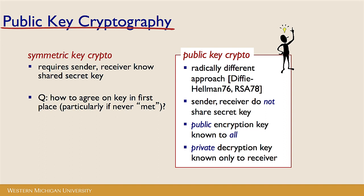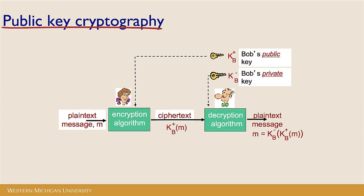Moving on to public key cryptography — this is just a different approach. In symmetric key crypto, we have to have the sender and receiver know the shared secret key. Our question was: how do we agree on that key in the first place? If I've never met you, I've never been to your server, how am I going to agree on a symmetric key? Enter public key cryptography, a very different approach where the sender and receiver don't have the same secret key. We have a public encryption key known to everybody, and a private decryption key known only to the receiver. Going back to our scenario: Alice wants to send Bob an encrypted message, but now using public key cryptography. Bob has at some point generated both a public and a private key.